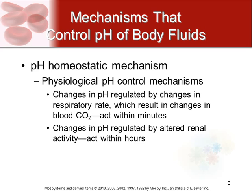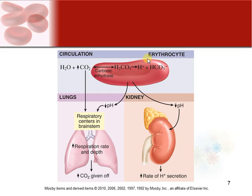CO2 is acidic, so if you're too acidic you can breathe off more CO2, which takes a few minutes but helps correct your pH. Changes in pH can also be regulated by your kidneys, because they can excrete more or less acid — but that takes a few hours to work. So: circulation acts instantly, respiration takes a few minutes, and kidneys take a few hours.